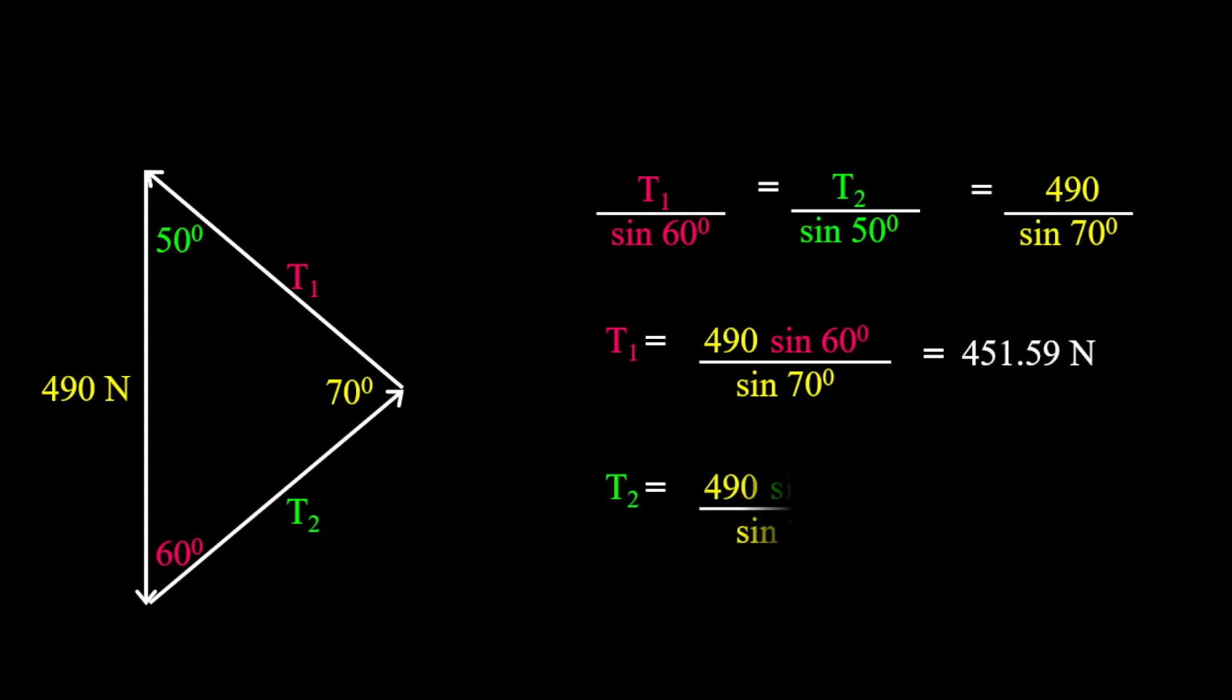For our T2, it equals to 490 multiplied by sine 50 degrees divided by sine 70 degrees. Therefore, T2 equals to 399.45 newtons.